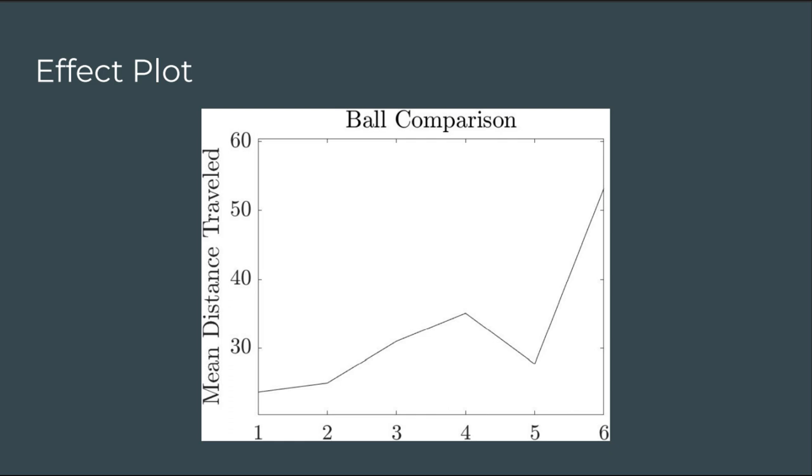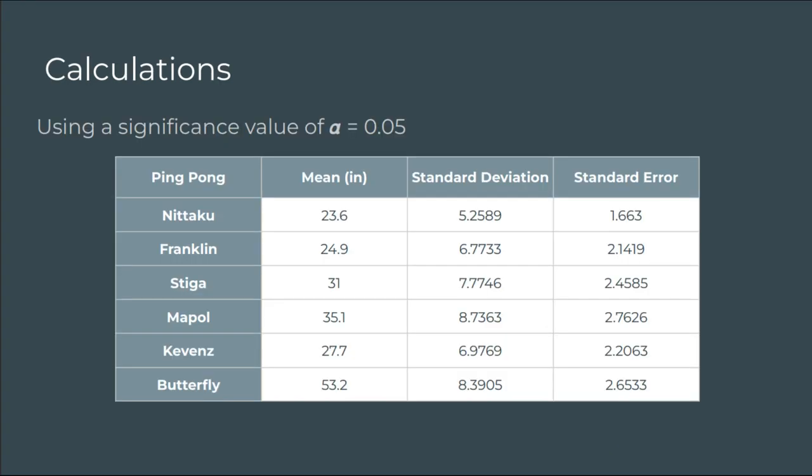Here's a graph between the mean distance traveled and each of the different brands. On the left side is inches, and on the bottom are each of the different brands, one through six, same as ordered on the previous slide.